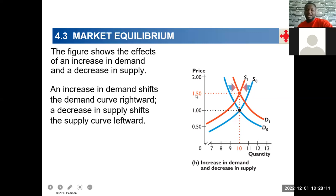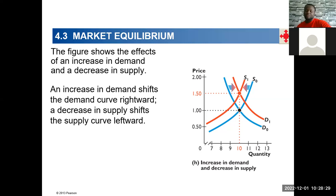What about quantity? When price goes up, demand falls; when price goes up, supply increases. So we wouldn't know what is going to happen to quantity until we know the relative magnitudes. When demand and supply are moving in opposite directions, we can be certain where price will go, but for quantity we can never know.